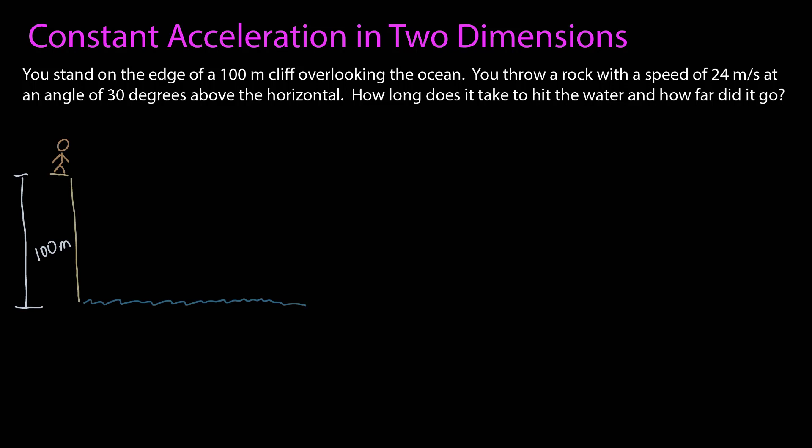As always, we start with a picture. So here's my person at the top of a cliff. The cliff is 100 meters tall. So a rock is thrown. I'm not told anything about how far above the ground the rock is when the rock is thrown, and the person is small compared to 100 meters. So I'm going to assume the rock left the point at the top of the cliff, 100 meters above the ocean.